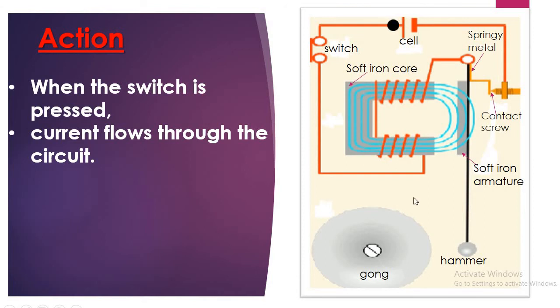Looking at the current flow, this makes the soft iron core become an electromagnet. I think we know electromagnets. If you're not sure, then I refer you to the previous lesson. We talked about electromagnets in detail.